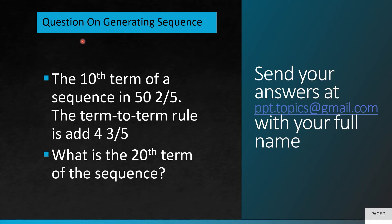So this question is on the topic of generating sequences. The 10th term of a sequence is 52.05. The term-to-term rule is add 4.305. What is the 20th term of the sequence?